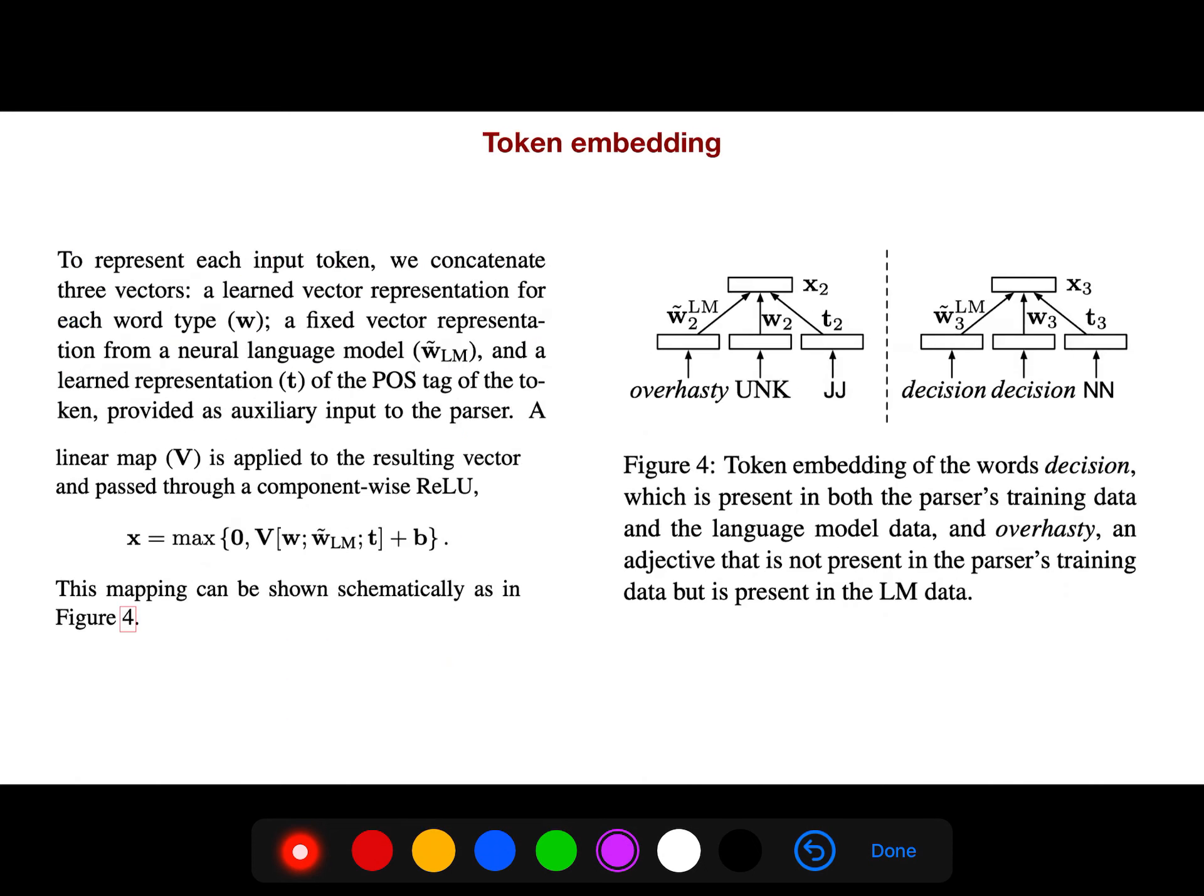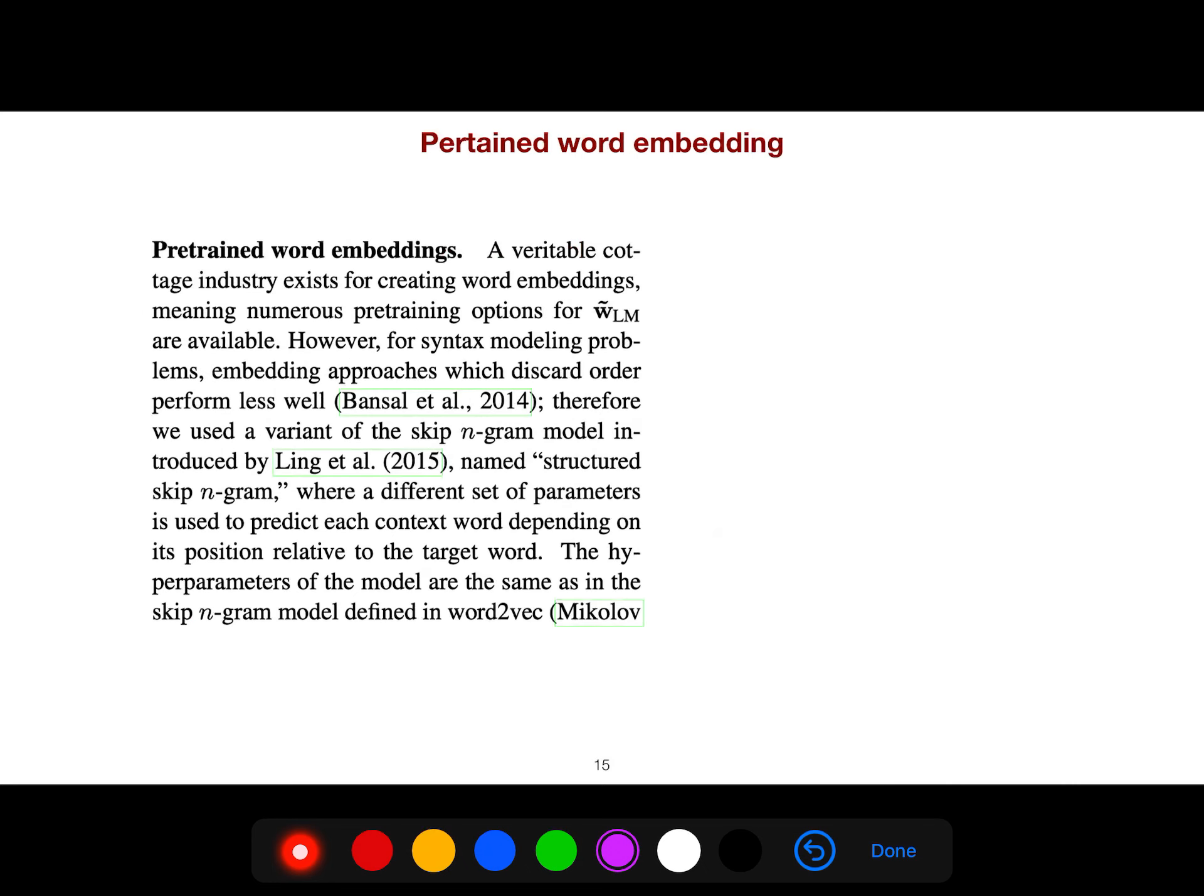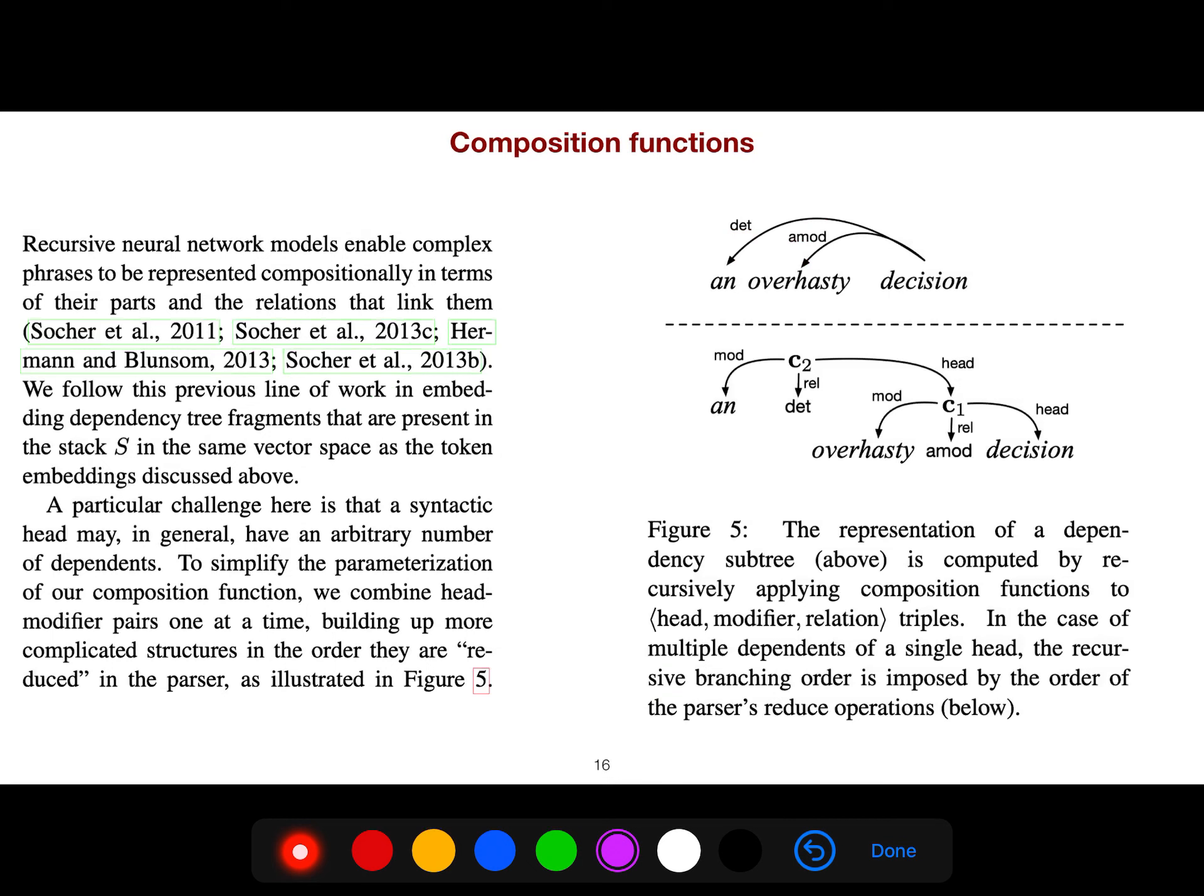There are some things you should note. In token representation, in token embedding, we can use token embedding of words, for example 'decision' which is parent of both parsers training data and the language model data, and 'over hasty', an adjective that is not present in the parser's training but is present in the language model data. You can also use pre-trained word embeddings.